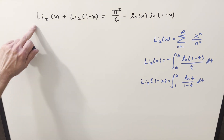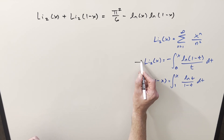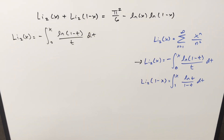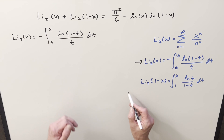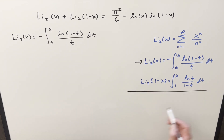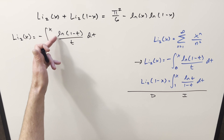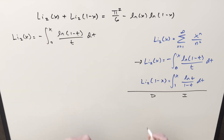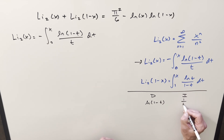For a starting point for deriving this formula, I want to use this definition right here. Basically what I want to do is take this and try to integrate it using integration by parts — I'll do the DI method on it. As you'd expect, I want to differentiate the natural log, so we'll differentiate ln(1 − t) and integrate 1 over t.